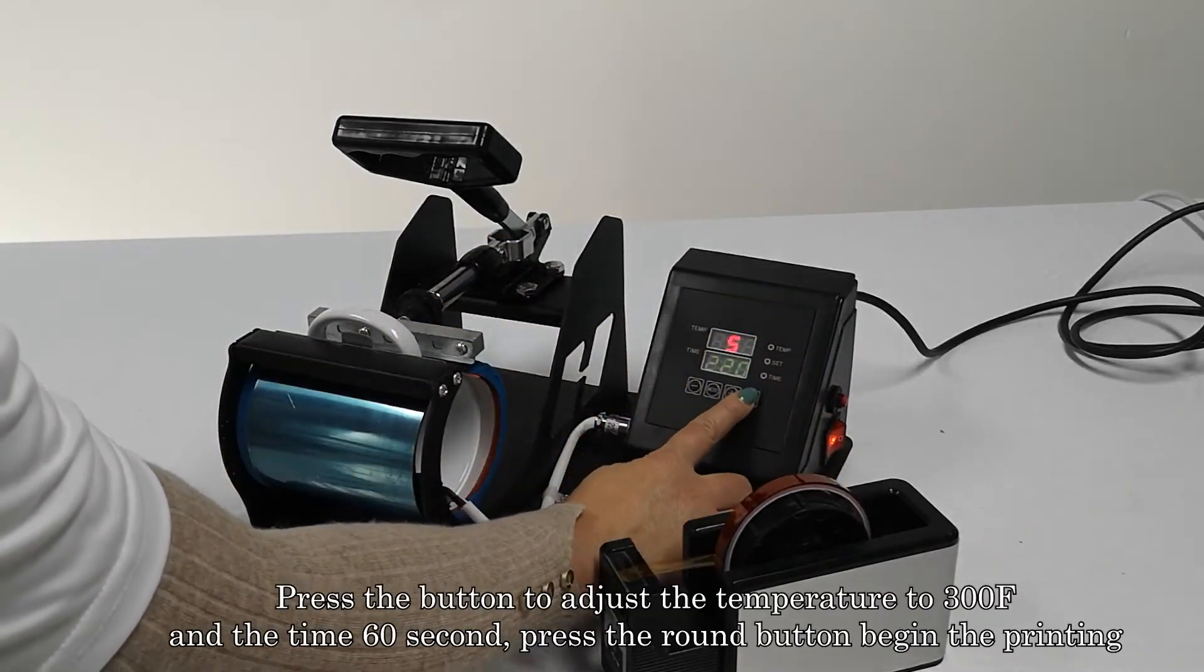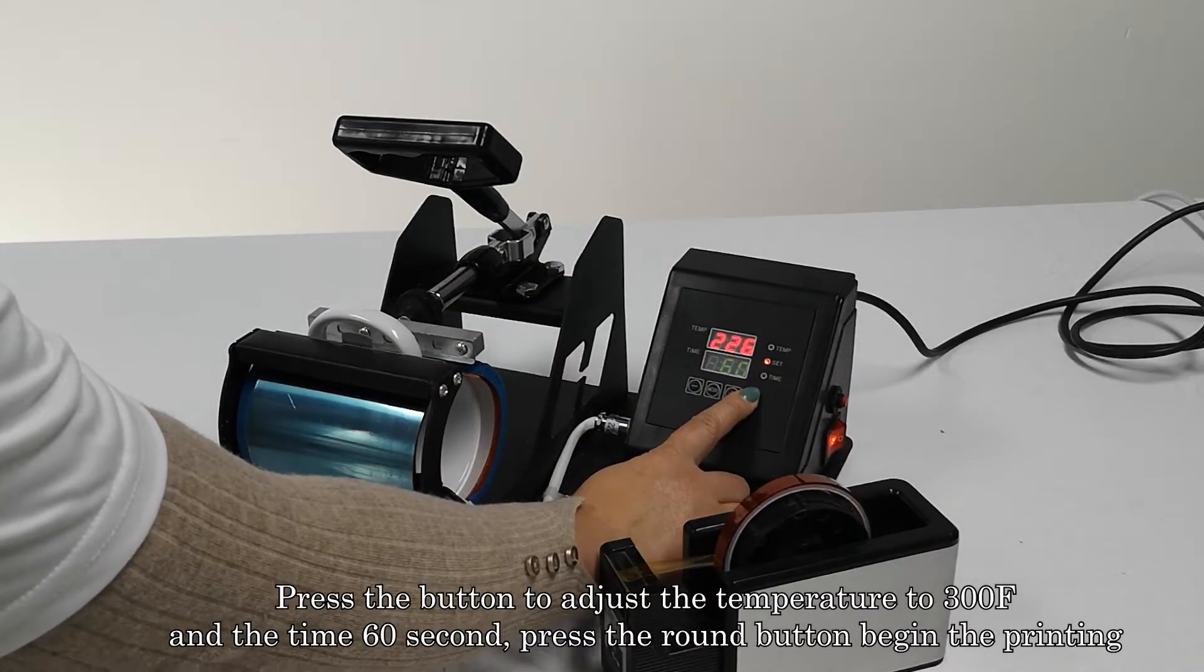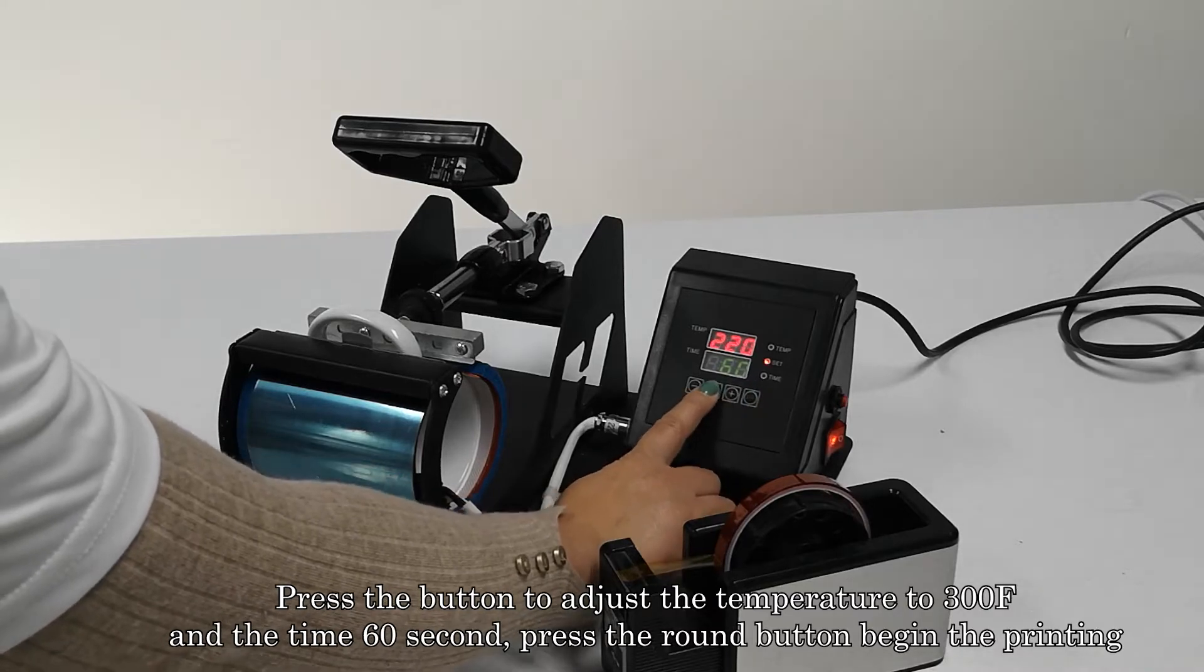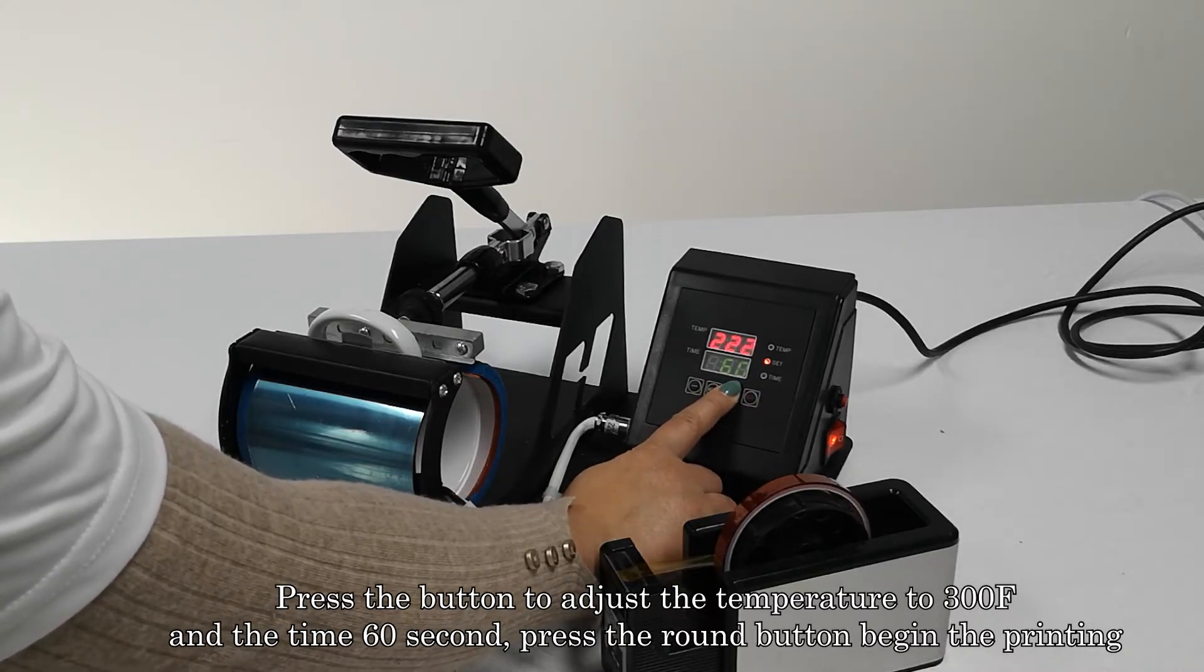Now turn on the power. Press the button to adjust the temperature to 300F and the time to 60 seconds. Press the round button to begin the printing.